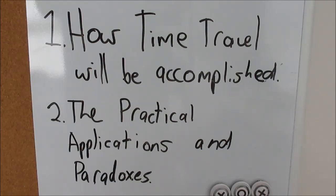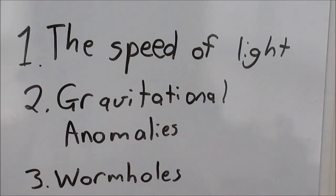Today we will be learning about its possibilities. There are two subjects that we will be covering: how time travel will be accomplished, and the practical applications and paradoxes involved. Time travel can be accomplished in several ways. The ways we will discuss here will be the speed of light, gravitational anomalies, and wormholes.